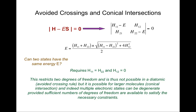However, if you have a larger molecule with more than a single degree of freedom, it certainly is possible for two electronic states — or more than two for that matter — to be degenerate. And where that happens, that gives rise in the potential energy surfaces to what's known as a conical intersection.